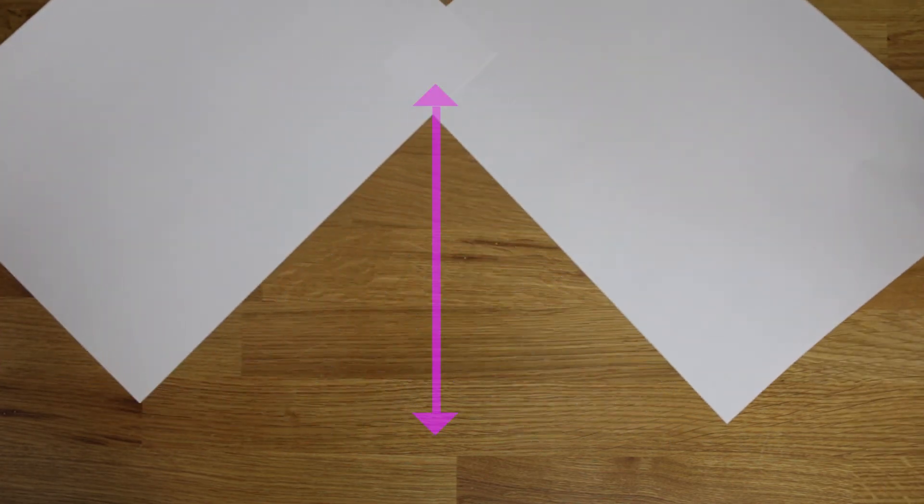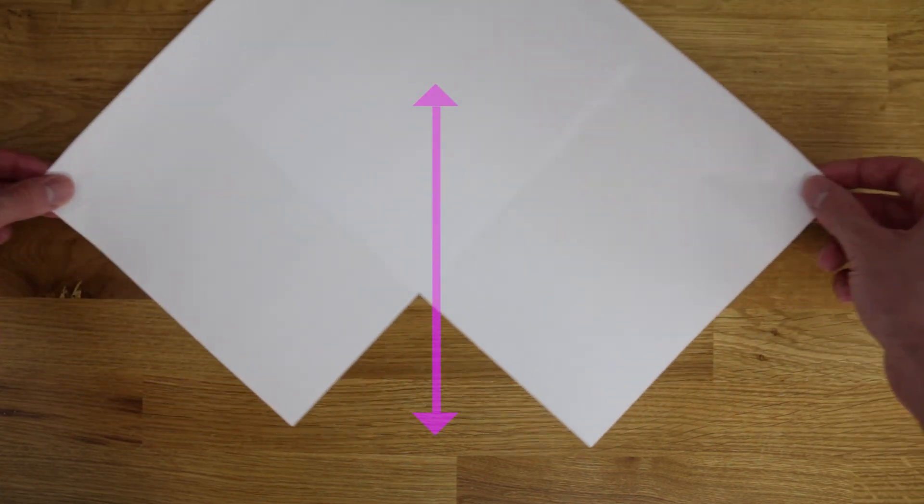Now for the last part, we need to move up and down or forwards and backwards, whatever orientation you like to look at it as. And to do this, we move the pieces of paper in opposite directions. So the left piece can go left, the right piece can go right, and you see how the point moves upwards.